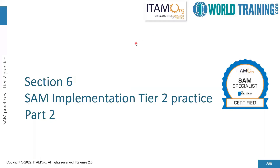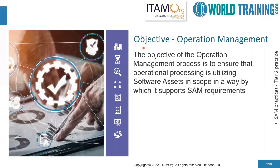We are now in part two of section six to implement the tier two SAM practice. We continue with our processes in tier two. We begin with operation management. This process ensures that operational processing is using software assets within scope in a way that supports SAM requirements during the day-to-day operations.